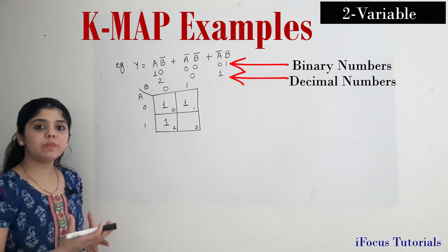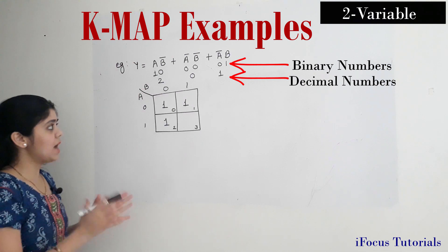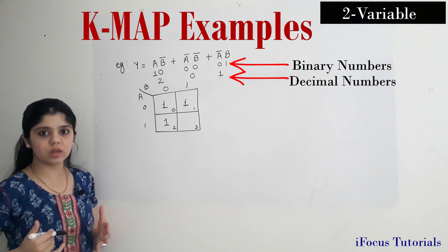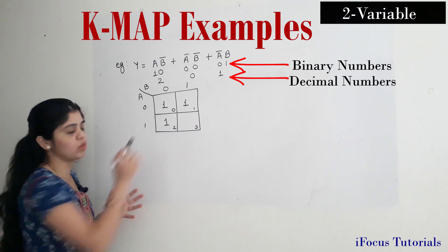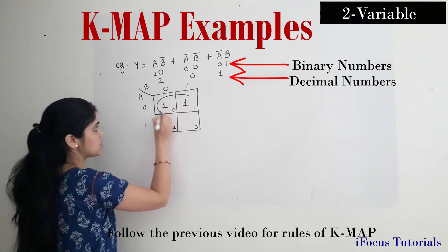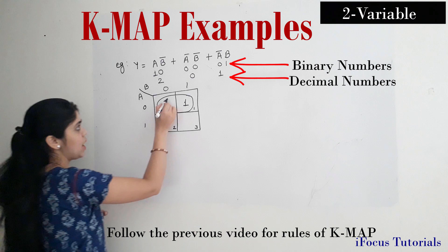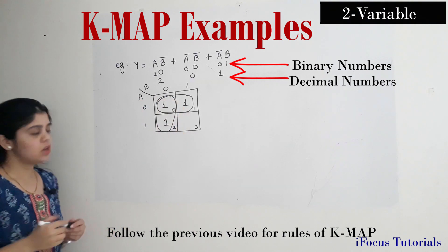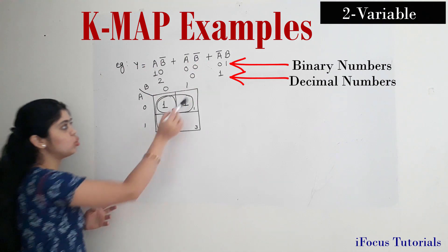Now we have represented our expression in our KMAP, so we will start with the grouping. The priority goes from octet to a single. Right now there are no octet terms — there are only 3 ones. So I can make a pair. I am grouping box 0 and box 1 together to make a pair, and grouping box 0 and box 2 together to make another pair. So I get 2 pairs here.